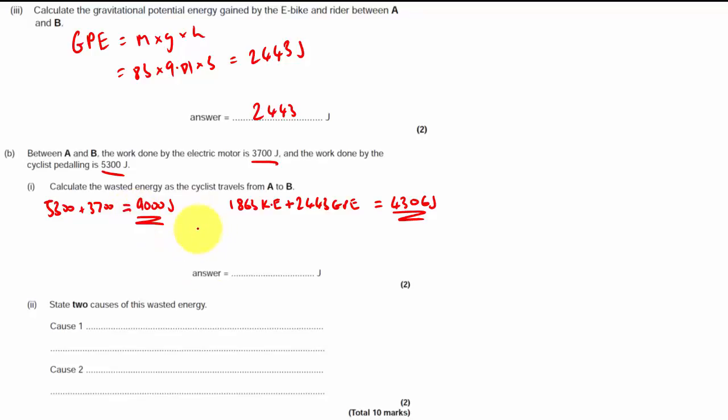So the lost energy is 9,000. I say lost, sorry. I should really say wasted or dissipated energy. 9,000 joules minus 4,306, which gives us an answer of 4,644. So 4,644 joules wasted. So how was this energy wasted?